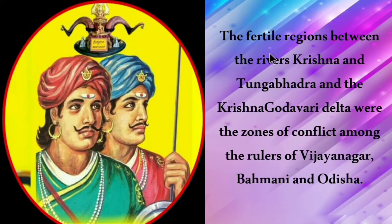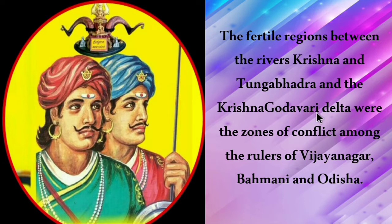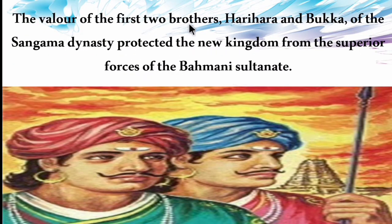The fertile regions between the rivers Krishna and Tungabhadra, and the Krishna-Godavari delta, were zones of conflict among the rulers of Vijayanagara, Bhamini, and Odisha. The valor of the first two brothers, Harihara and Bukka of the Sangama dynasty, protected the new kingdom from the superior forces of the Bhamini sultanate.